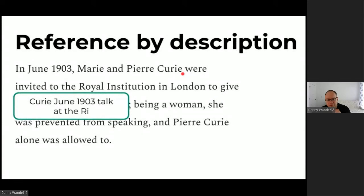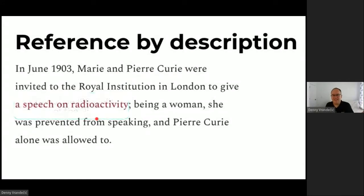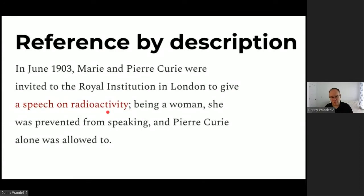Next: reference by description. How do we talk about things that do not have a Wikidata item? For example, the speech the Curies were invited to in 1903 at the Royal Institution. There isn't a Wikidata item for that. OWL has something of a solution, but Wikidata doesn't. There are tons of entities in Wikipedia created on the fly, referenced rarely, with weak identity conditions, whose maintenance quickly becomes a major headache.